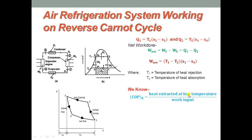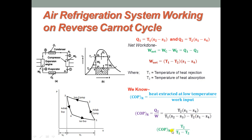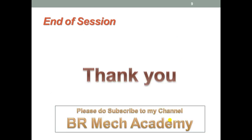Therefore, COP of refrigeration = heat extracted at low temperature / work input = Q₂ / W = T₂(S₁ - S₄) / [(T₁ - T₂)(S₁ - S₄)]. After simplification, COP of refrigeration = T₂ / (T₁ - T₂). This is the expression for the coefficient of performance of an air refrigeration system working on the reversed Carnot cycle. This is the end of the session on introduction to refrigeration cycles and the reversed Carnot cycle.